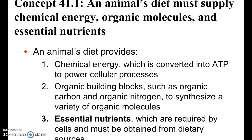A glucose molecule goes into the mitochondria. There are different types of breaking down of glucose molecules: there's anaerobic respiration, aerobic respiration, and fermentation. Fermentation takes place in the cytoplasm. For every glucose molecule, you're going to end up getting anywhere from 28 to 36 ATP.